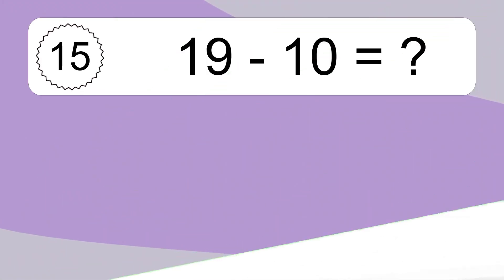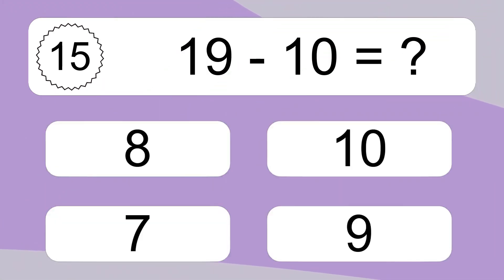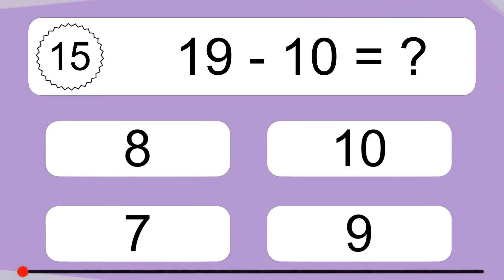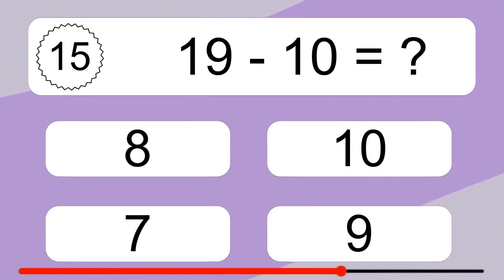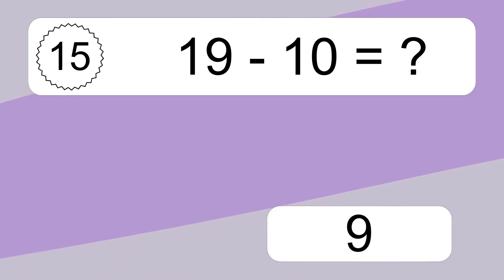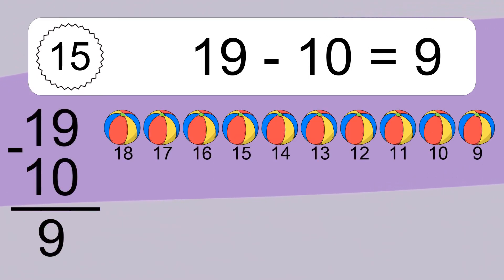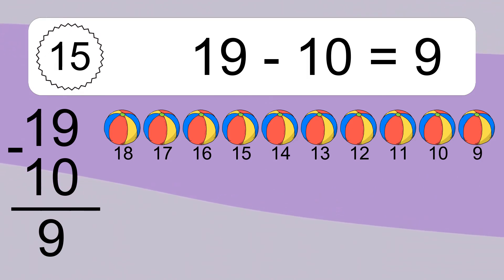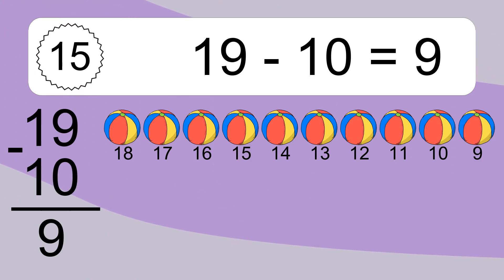19 minus 10 equals what? 19 minus 10 equals 9. Let's count it. 18, 17, 16, 15, 14, 13, 12, 11, 10, 9.